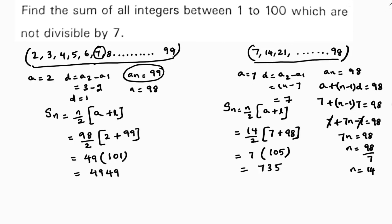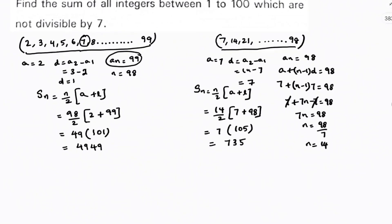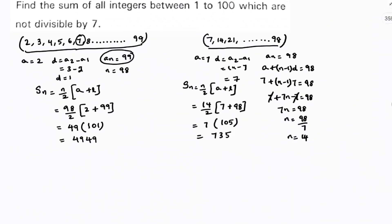Now here the question is we need to find sum of all the integers. Here I got the total sum and here I got the sum of multiples of 7. So sum of all integers between 1 to 100 which are not divisible by 7 is the sum of all the numbers from 2 to 99, that is 4949, minus sum of all the multiples of 7, which is 735.